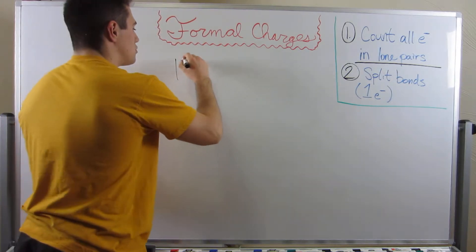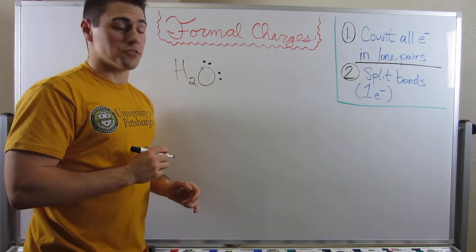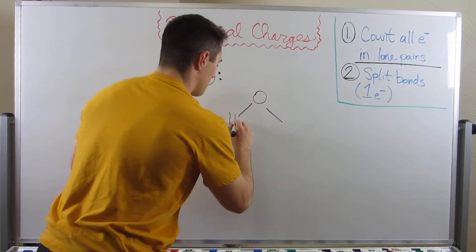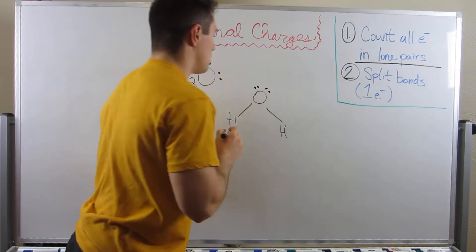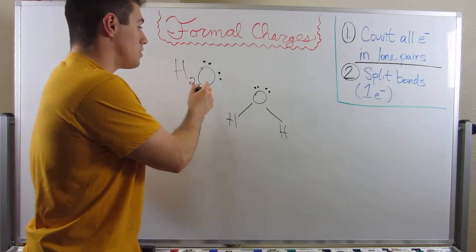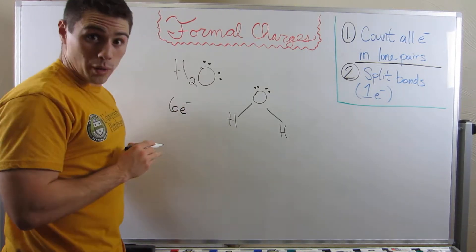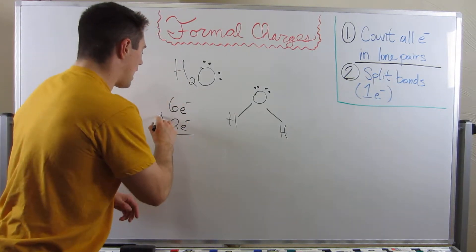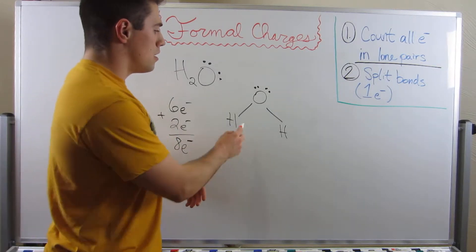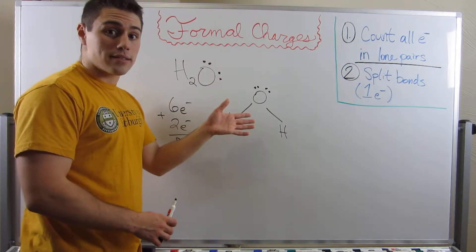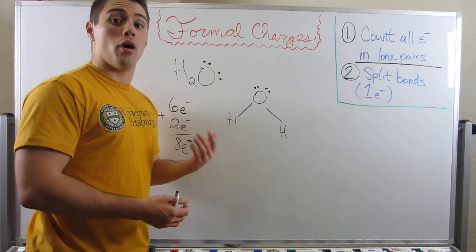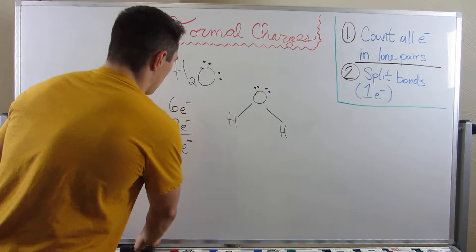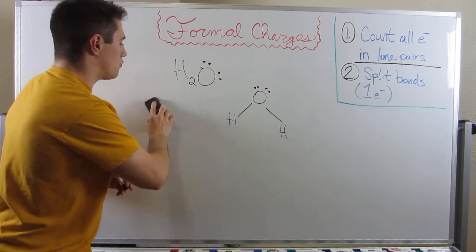Let's look at the Lewis dot structure of water and assign some formal charges. The Lewis dot structure looks like this. Oxygen is in the sixth column of the periodic table, so it brings six electrons. Hydrogen, being in the first column, brings one — and we have two hydrogens — for a total of eight electrons. Counting them: two, four, six, eight. Oxygen has a full octet, and each hydrogen has two electrons. We're all square.